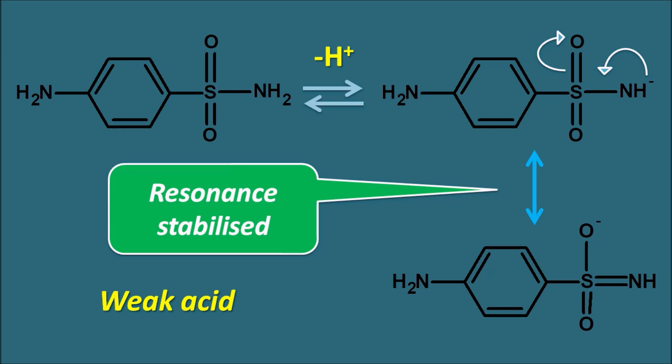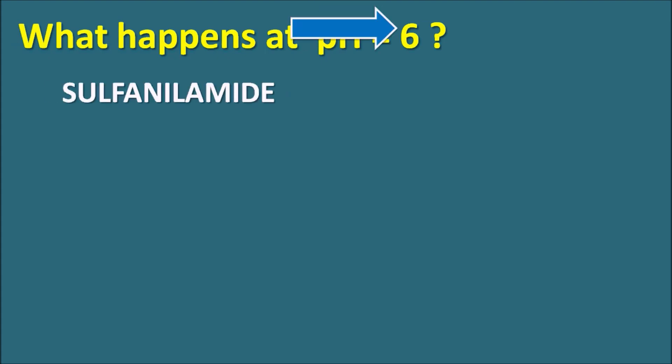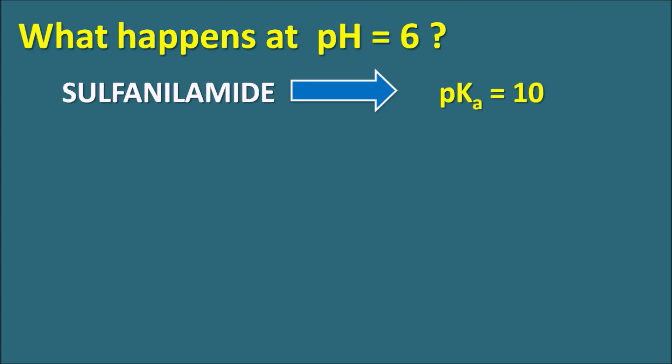Even though sulfonamide has an aniline-like structure, the sulfonamide group makes it a weak acid capable of forming salts with bases. Whether it exists as salt or acid depends on solution pH: at alkaline pH it mainly forms salts, while at acidic pH it exists mainly in the acid form. At pH 6 with pKa 10, we can assess the drug's ionization state.